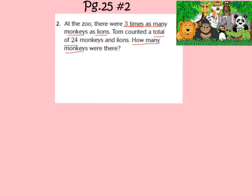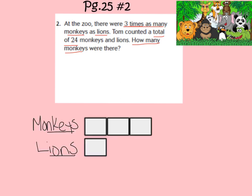We know that this is a comparison problem because we are comparing monkeys and lions. So we need to draw a comparison model so that we can solve the problem. The model is going to look similar to the ones that we drew earlier in lesson 2.1. Here is what your comparison model should look like. We have our monkeys and we have our lions. We know that there are three times as many monkeys as lions, so we have three boxes representing that part of the word problem. Make sure that your model looks just like mine.